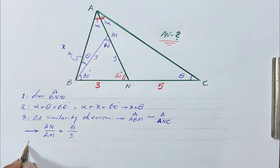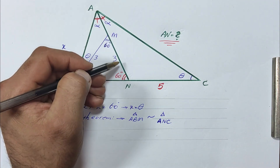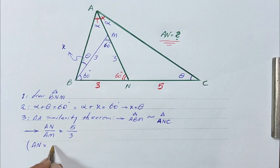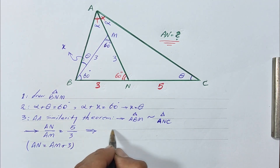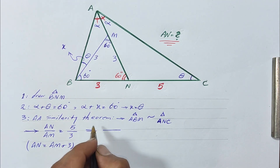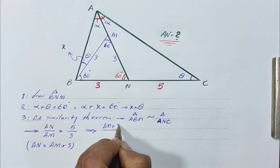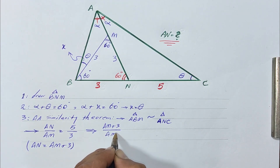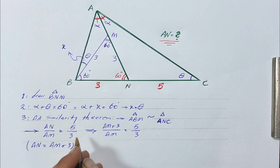We know that AN equals AM plus 3. So substituting, we have (AM + 3) over AM equals 5 over 3.